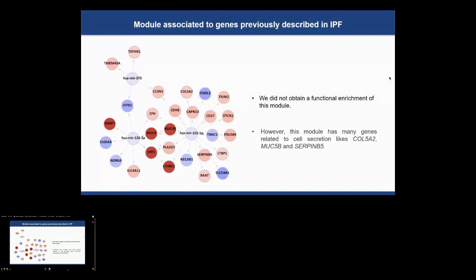Other pro-fibrotic genes with secretory function within the last module were COL5A2, MUC5B, and SERPINB5.